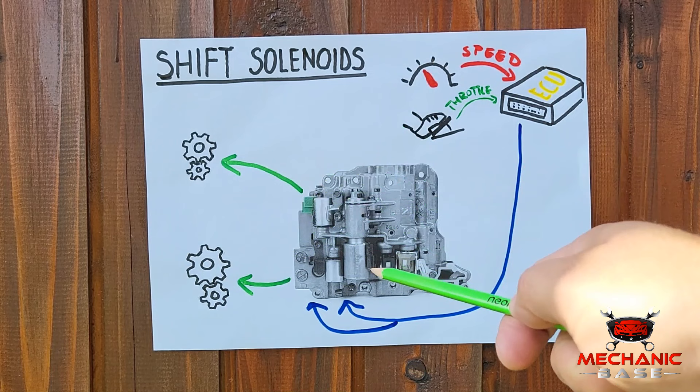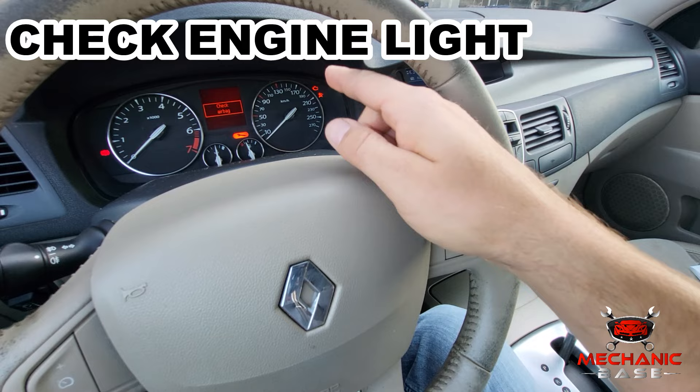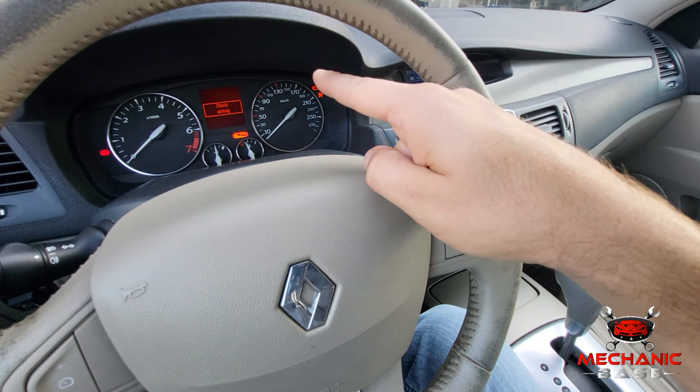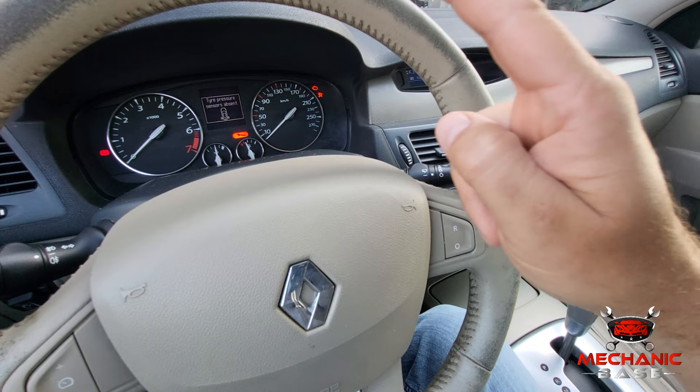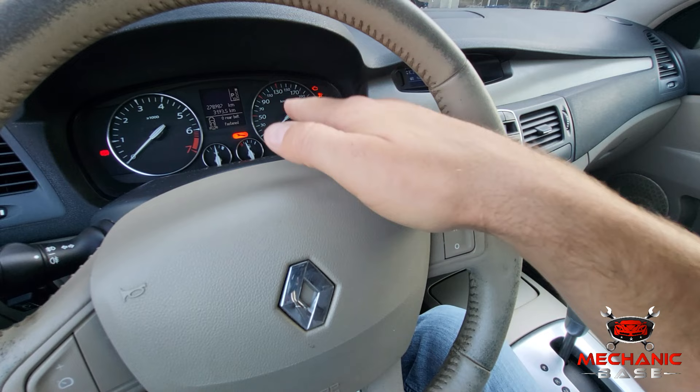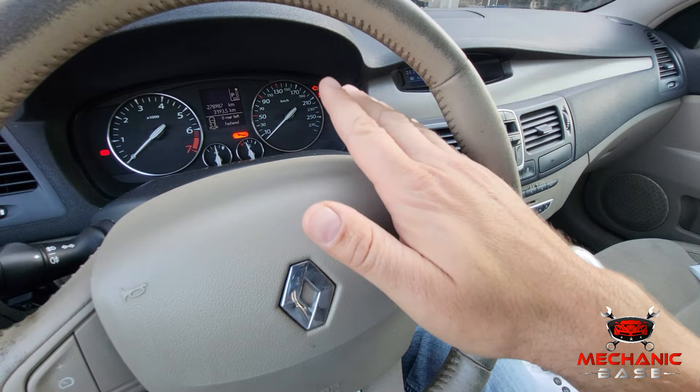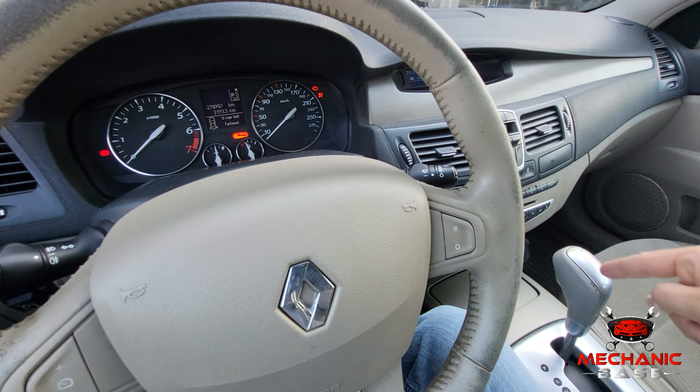The check engine light is one of the first signs you'll notice when one of the shift solenoids is bad. Despite its name, this warning light will also appear when there is a problem with the transmission. This is because it actually indicates there is a problem with the drivetrain components, which the automatic transmission definitely is. Many things can trigger a check engine light, but if it comes accompanied by erratic or unusual shifting, a faulty shift solenoid may be the cause.